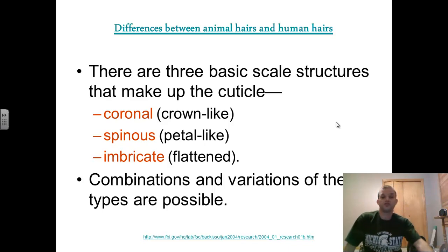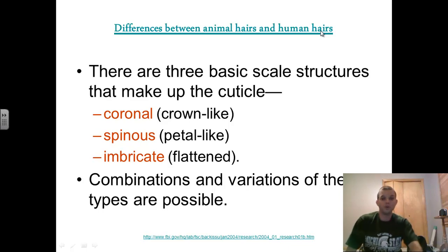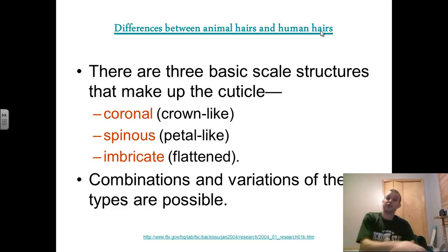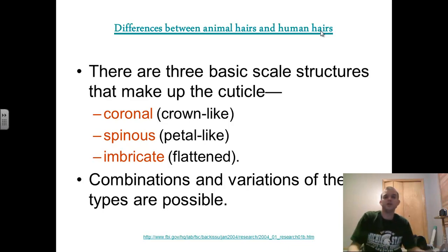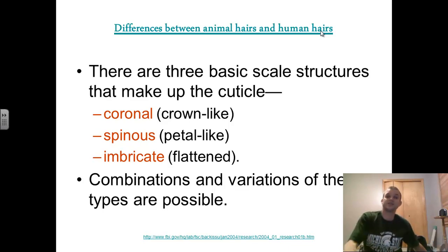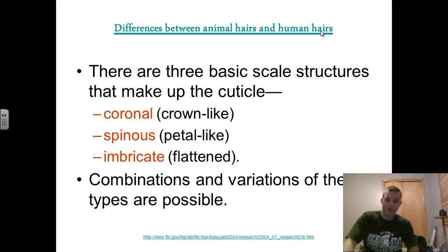When we look at the scales, there are really three different types. There's coronal, which is kind of crown-like — it looks like a Burger King crown. You get spinous, which are like little petals that look like little spines. And then you get imbricate, which is what the last slide was showing you — just little scales that flatten over the top of one another. In certain species you're going to have more than just one of these types. You might find some hairs have coronal, some have spinous, some have imbricate. You're not going to get necessarily the same hair patterns in every particular piece of hair from every individual, and you'll see that when you look at your own hairs. We collect hair samples for control purposes and have to collect at least 50 hairs because of the variety of different styles in each individual.